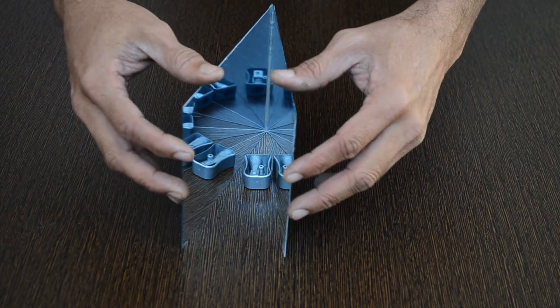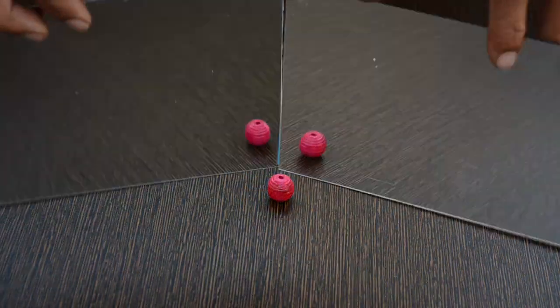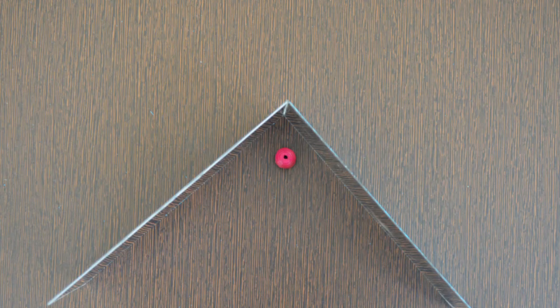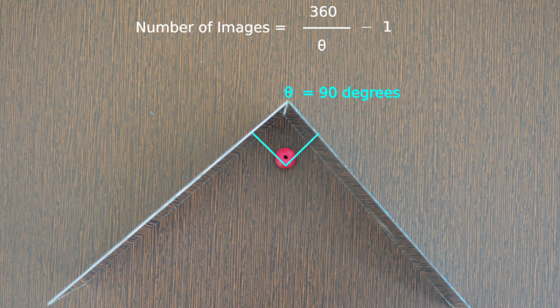Number of images formed depends on the angle between two plane mirrors. Number of images are derived with the formula where theta is the angle between the mirrors.